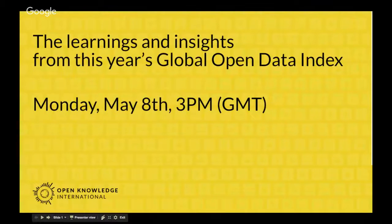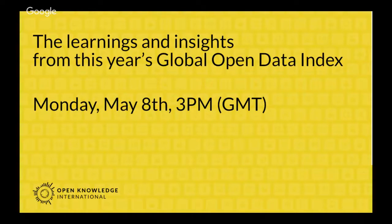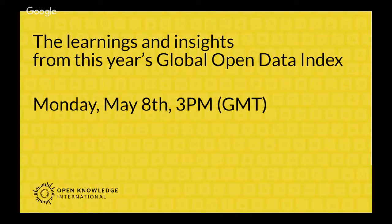First, we wanted to talk a bit about what the index is, where it comes from, and from there we will continue to talk about how it changed for this year specifically and what we've learned from the assessment for 2016. The index is composed of a survey where we assess a group of key datasets that should be collected and published by governments on the national level all around the world.